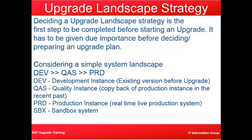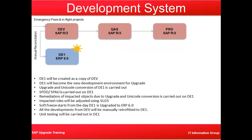Here you can see the development system. DE1 is created as a copy of your DEV system — you are creating a fourth system. DE1 will become the new development environment for the upgrade, so this is the system that will be upgraded first. This is your normal project landscape, but for upgrade, DE1 is the first upgrade system, created using a system refresh or system copy from the development system. Upgrade and unicode conversion of DE1 is then carried out.